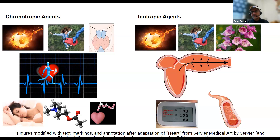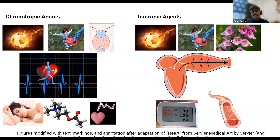Inotropic agents that increase stroke volume and/or contractility of the ventricles include the sympathetic nervous system and epinephrine or adrenaline. Digitalis, also called digoxin, causes an increase in sodium, which causes an increase in calcium, and that increases the contractility of muscle.